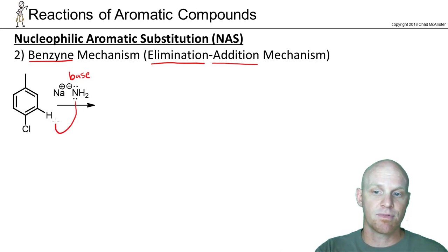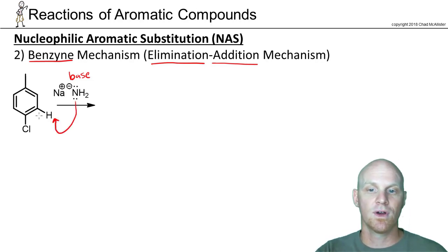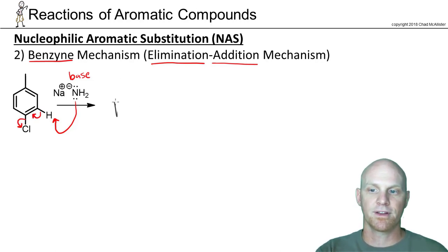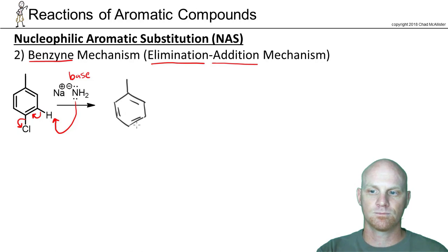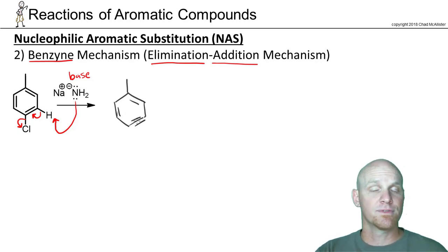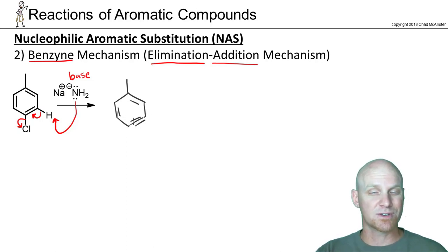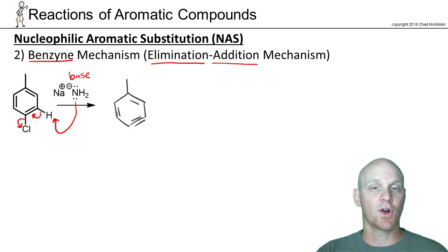The first step is to deprotonate a hydrogen next to where the leaving group is, something akin to an E2 elimination, forming a triple bond in the benzene ring. This should look really strange — those are SP hybridized carbons, meaning their bond angle should be 180°, but they're constrained in the ring, so there's quite a bit of angle strain. This is probably a pretty high-energy intermediate.